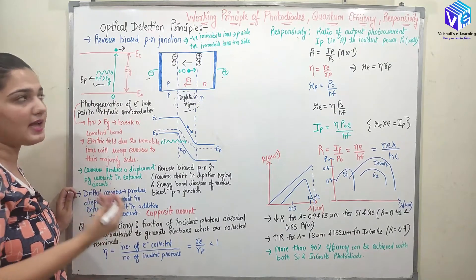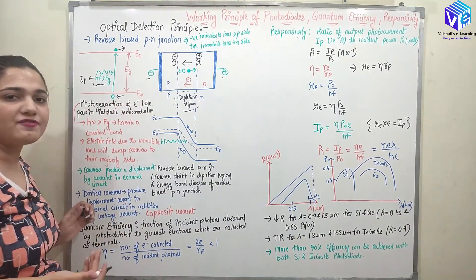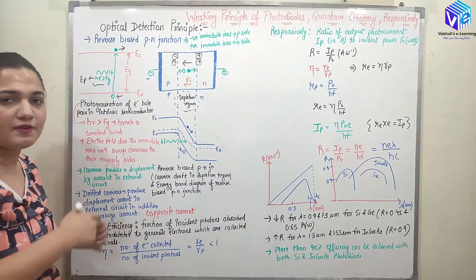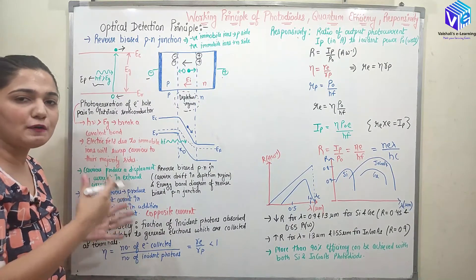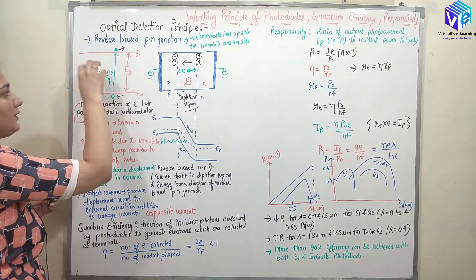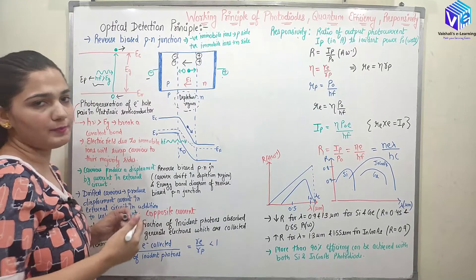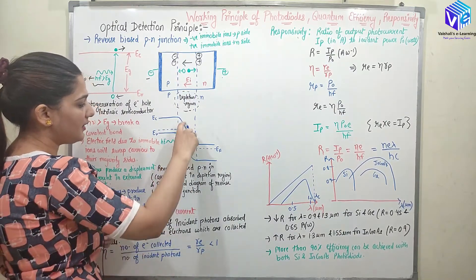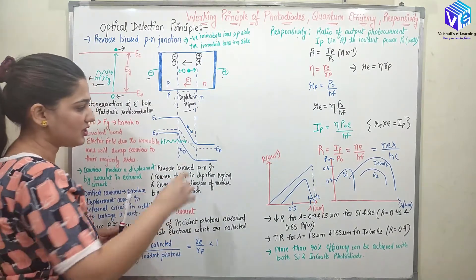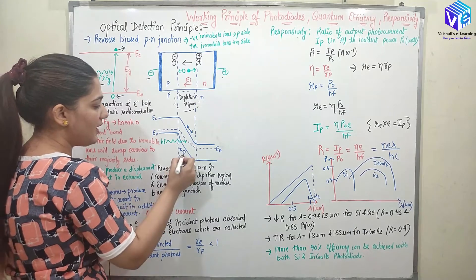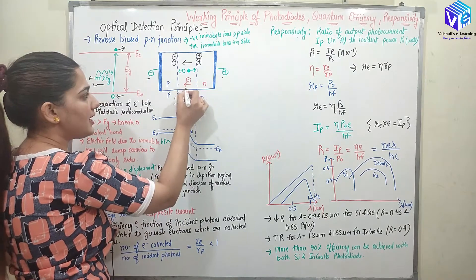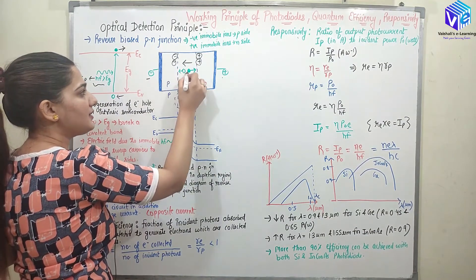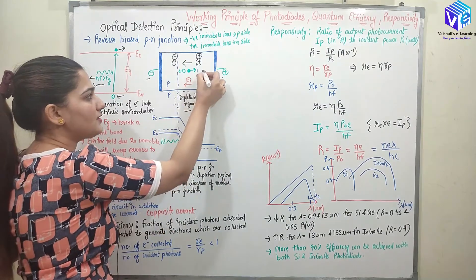When a higher energy photon comes and collides near the depletion region, we generate an electron-hole pair. This electron moves towards the conduction band — we have generated an electron in the conduction band — and in the valence band, a hole is left behind. This electron-hole pair is used for the generation of the displacement current. The electron-hole pair is generated in the depletion region only. Due to the intrinsic electric field, the holes will move towards the P side and the electron will move towards the N side — they are moving towards their majority sides.